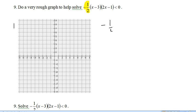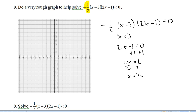When this equals 0, that'll give us our x-intercepts. So, when x minus 3 equals 0, that'll give us x equals 3. And 2x minus 1 equals 0. We need to add 1 to both sides. x equals 1 half.